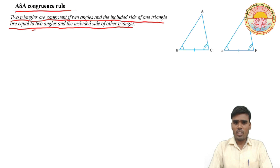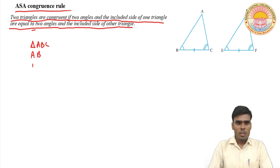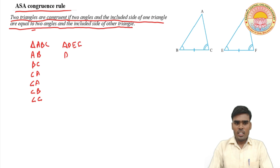The corresponding parts of triangle ABC and triangle DEF are: parts of triangle ABC are AB, BC, CA and angle A, angle B, angle C; and the parts of triangle DEF are DE, EF, FD and angle D, angle E, and angle F.